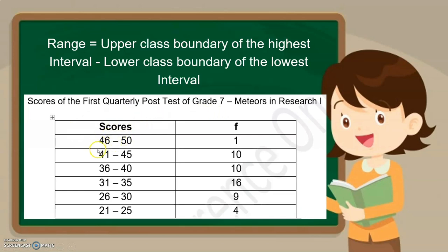As you can see in these scores, we have 6 classes. The lowest class is 21 to 25 and the upper class is 46 to 50. Now, we are asked to get the upper class boundary of the highest interval. Alin ba dyan yung upper class natin? Di ba itong 46 to 50? Between 46 and 50, that is 50. So, ano ba yung upper boundary nito? And that is 50.5. Since 50, the next number after 50 is 51, so the boundary between 50 and 51, which is the upper class, is 50.5. Our upper class boundary of the highest interval is 50.5.